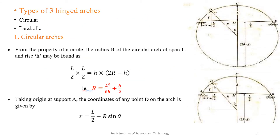Three-hinged arches are of two types: circular and parabolic. For a circular arch, from the property of a circle, the radius R of a circular arch of span L and rise H is: (L/2) × (L/2) = H × (2R − H), giving R = L²/(8H) + H/2. This equation is used for solving problems.